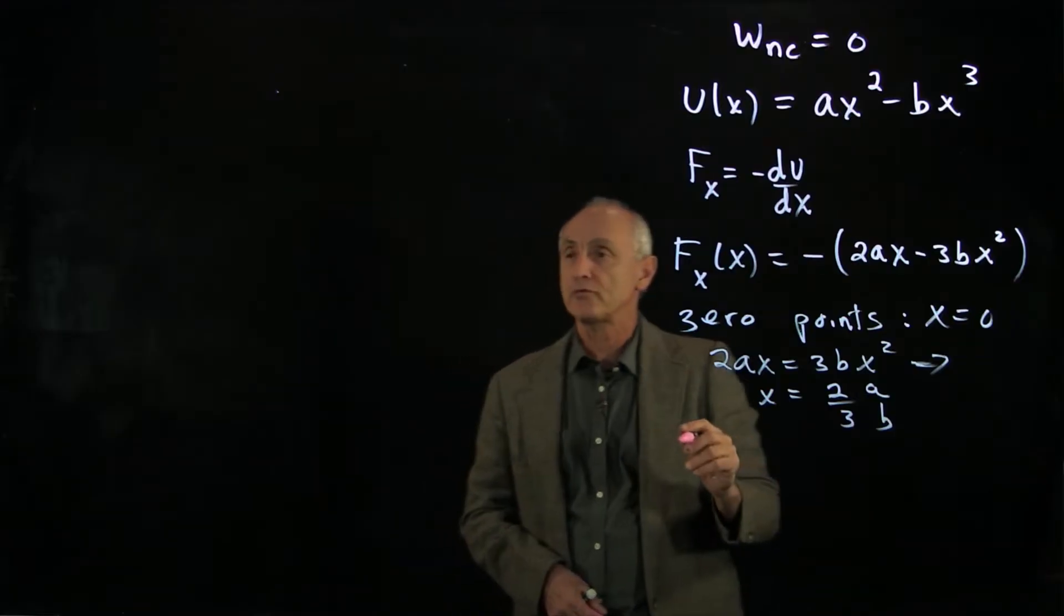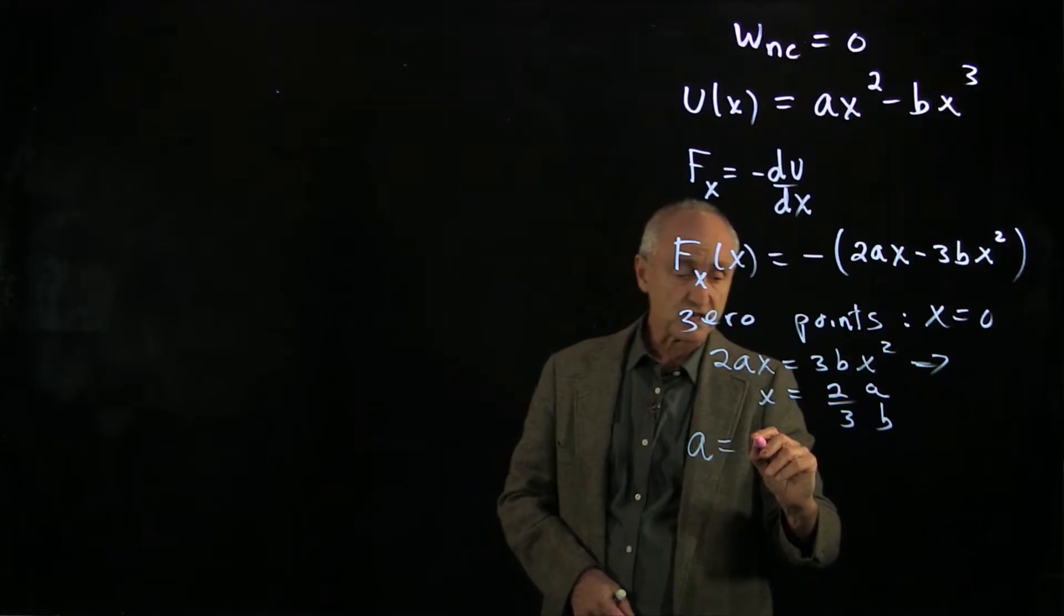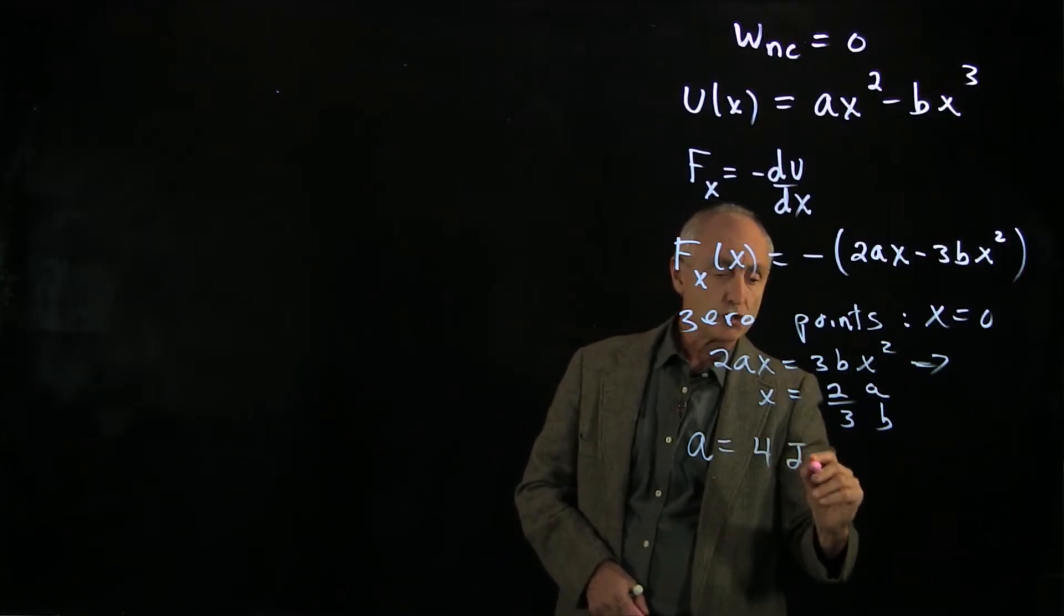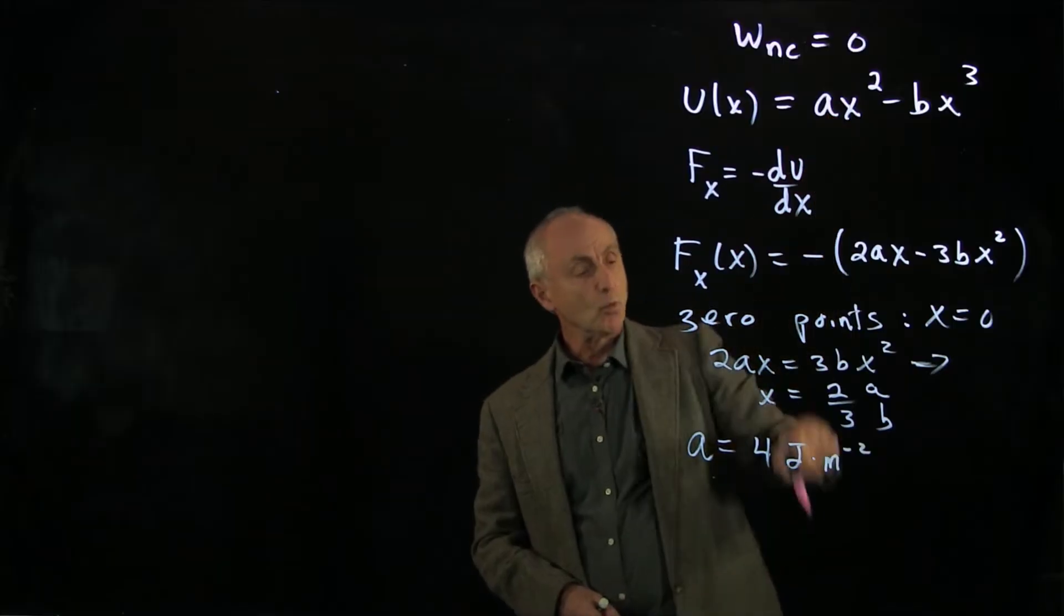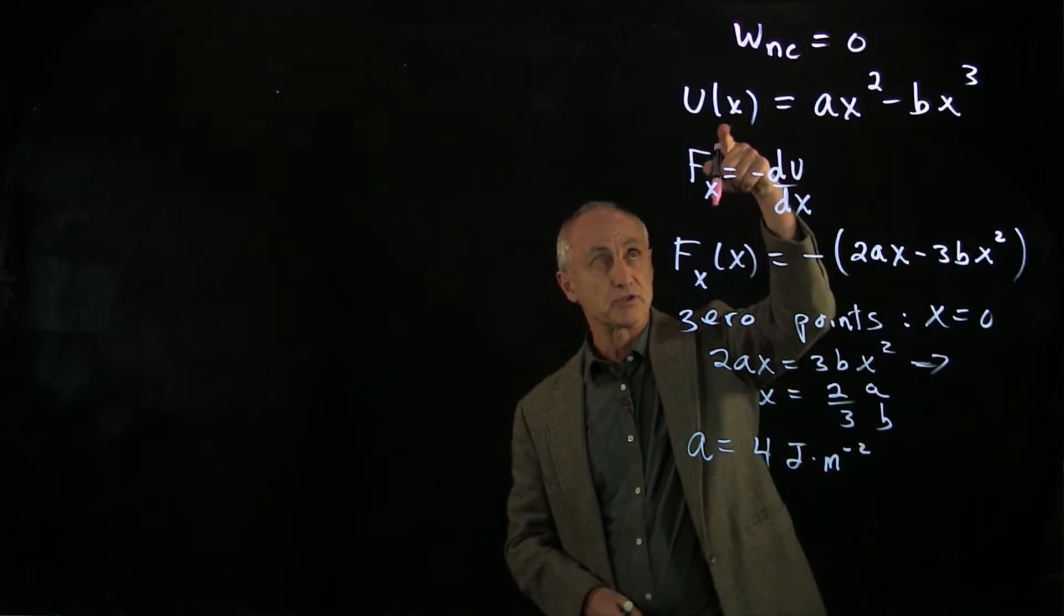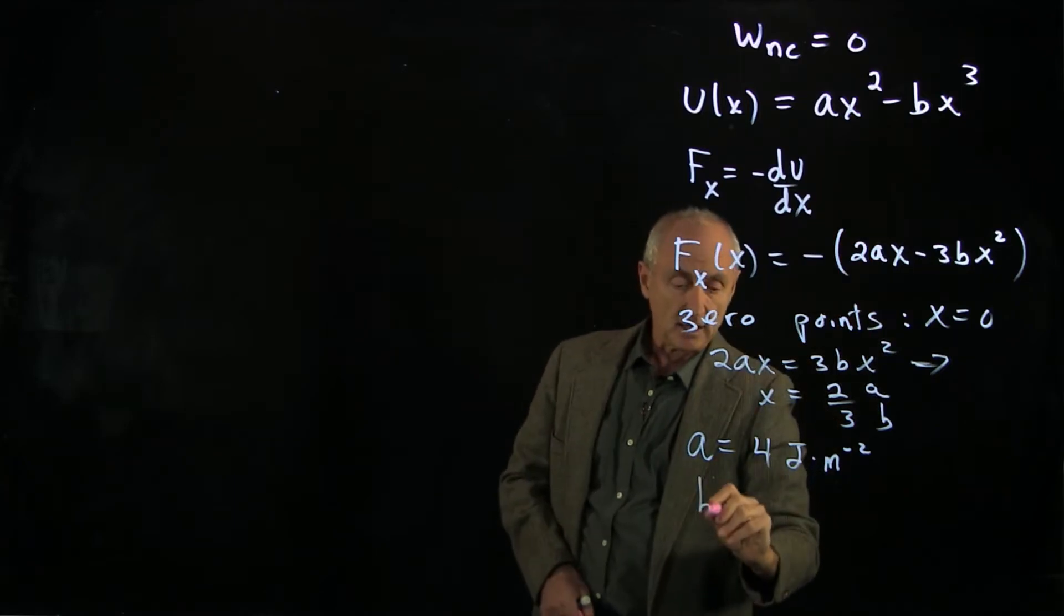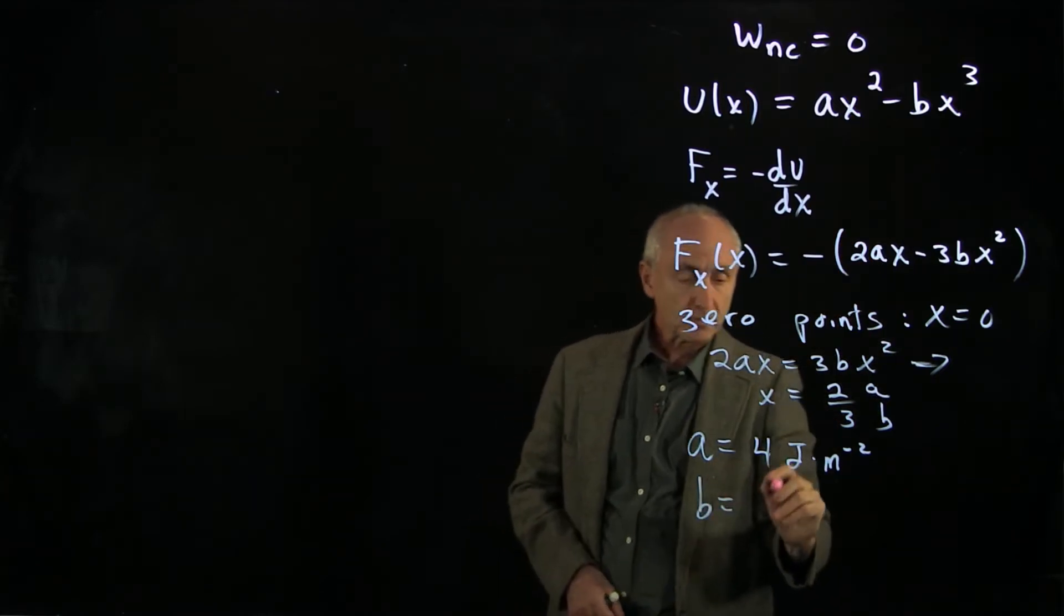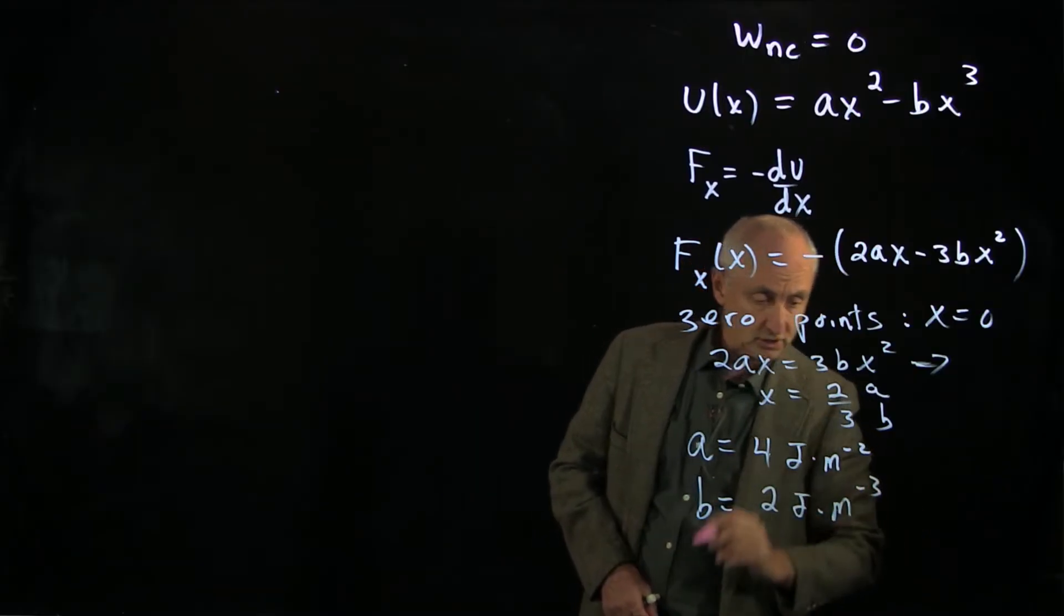Let's also, for our example, just put some numbers in for simplicity. Let's write a as 4 joules per meter squared. The units of potential energy are joules, and we're multiplying by x². And we're going to write b as 2 joules meter to the minus 3.